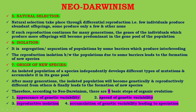Fifth is natural selection. It occurs through differential reproduction — that is, few individuals produce an abundance of offspring, some produce only a few, while others produce none. If such reproduction continues for many generations, the genes of individuals which produce more offspring will become predominant in the gene pool of the population.